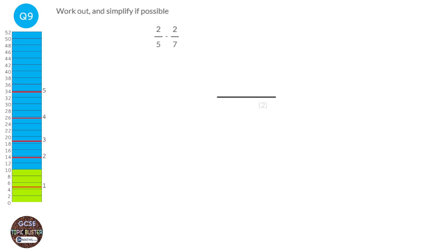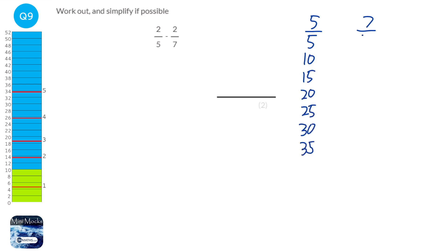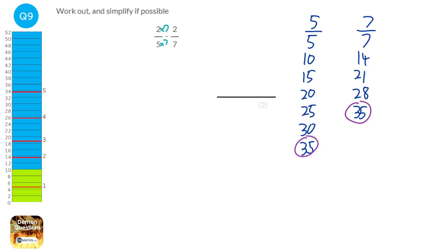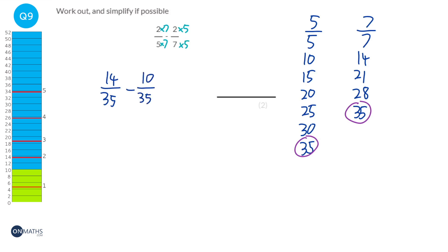To add or subtract fractions, we must make the denominators the same. We write out the 5 and 7 times tables until we find a common number, which is 35. For the first fraction we multiply top and bottom by 7, for the second by 5. So 2 times 7 is 14 over 35, and 2 times 5 is 10 over 35. Then we take away the numerators: 14 take away 10 is 4, giving us 4 over 35. We can't cancel it, so the answer is 4 over 35.